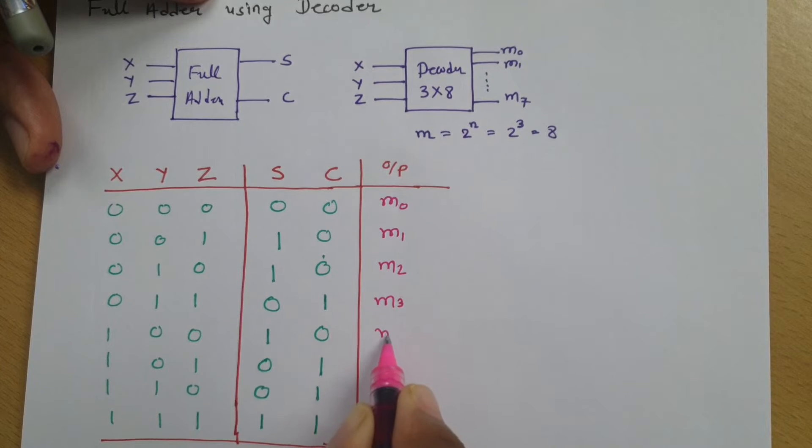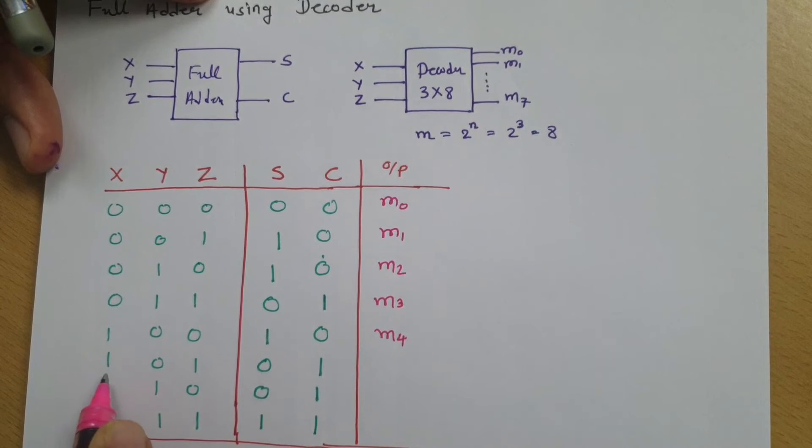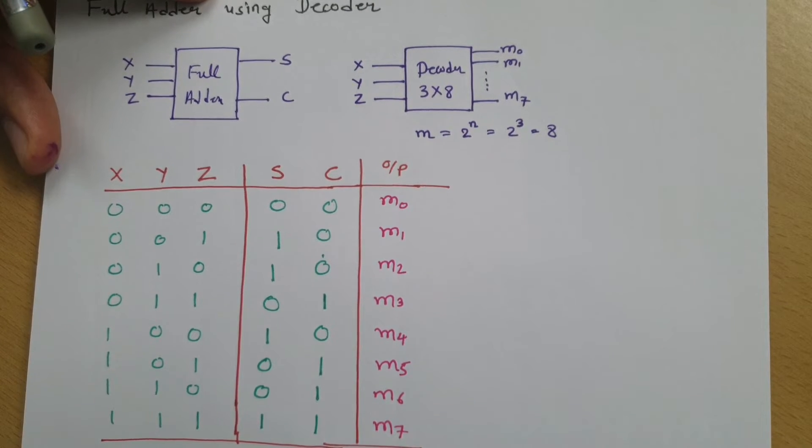For 1,0,0, M4 will get selected. For 1,0,1, M5 will get selected. For 1,1,0, M6 selection will happen. And for 1,1,1, M7 terminal will get selected.